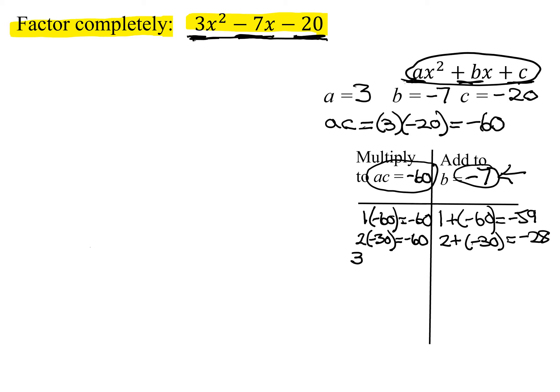Does three go into negative 60? Yes, 20 times. So three times negative 20 is negative 60. Three plus a negative 20 is negative 17. Is that the number I'm looking for? No, but it's getting closer.